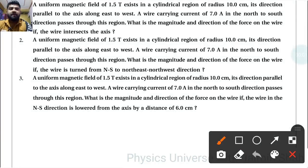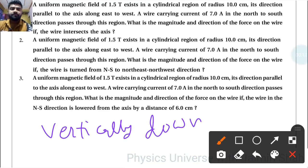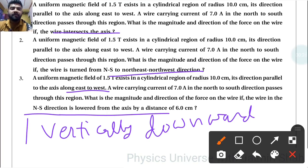Here every force, whatever force is exerting here, every force is vertically downward direction. So because of north east to west and the wire in the north to south, every force in first case, second case and third case, every force is vertically downward direction exerting.